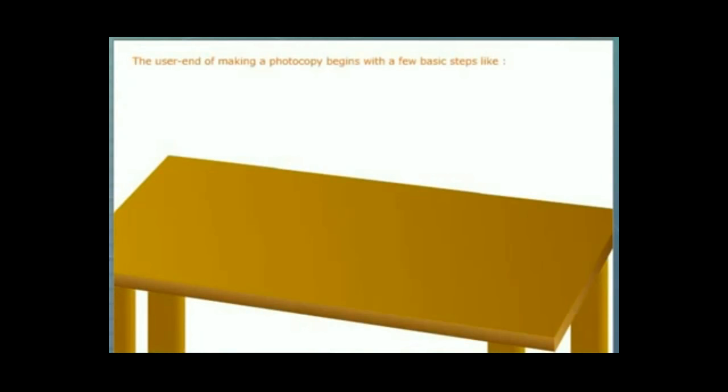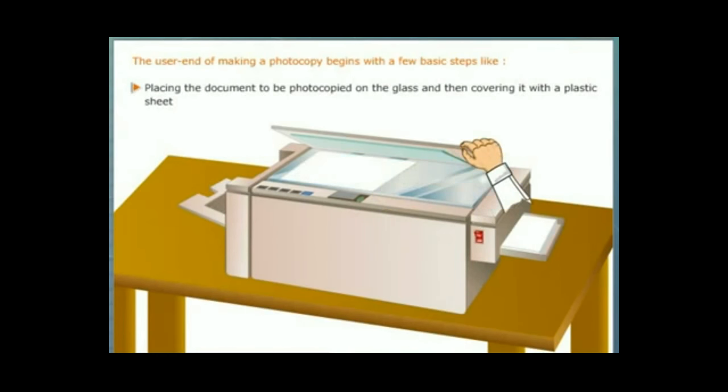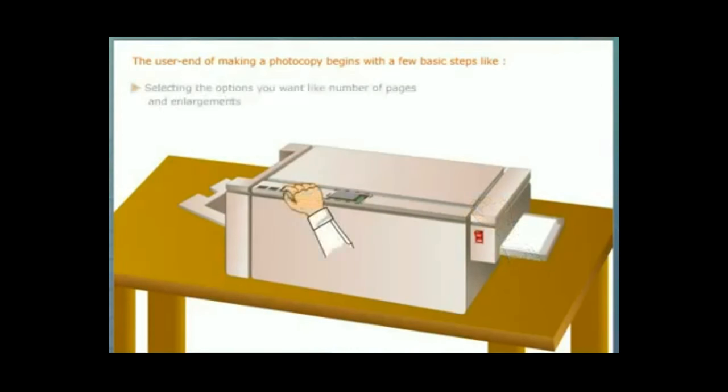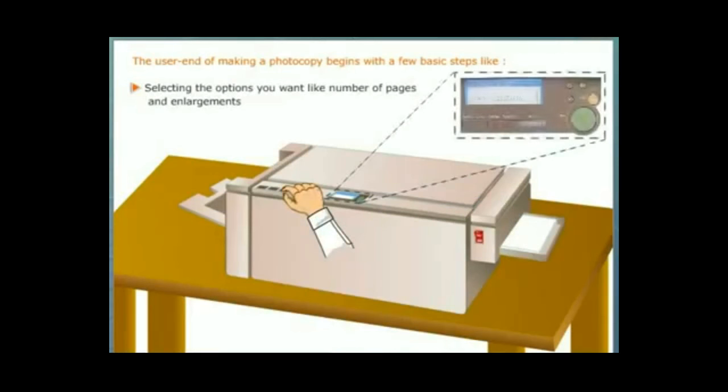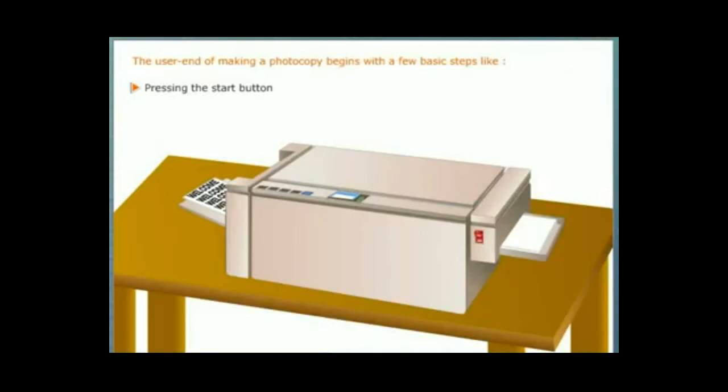The user end of making a photocopy begins with a few basic steps like opening the copier lid, placing the document to be photocopied on the glass, and then covering it with a plastic sheet. Selecting the options you want like number of pages and enlargements, pressing the start button. What happens inside the copier when we press the start button is amazing to know. To understand what is taking place inside the copier, we have to first understand the parts of the copier.